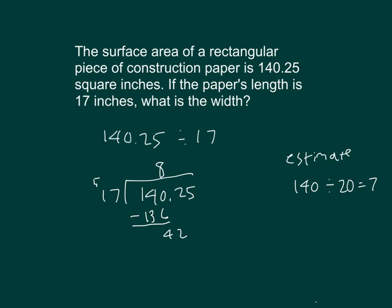42 divided by 17 is 2, because 2 times 17 is 34, and 42 minus 34 is 8. Bring down the 5.